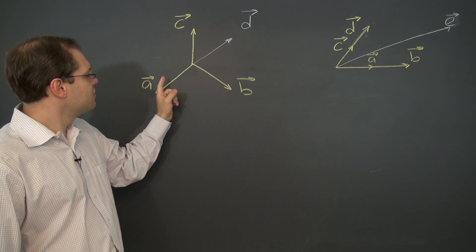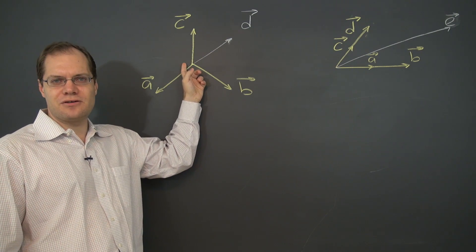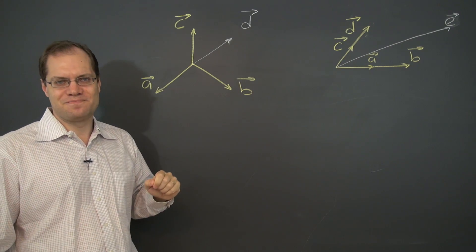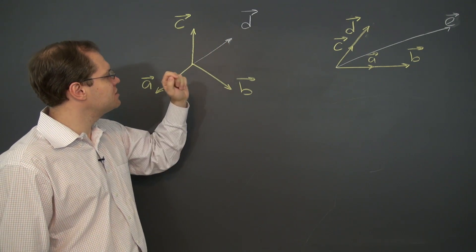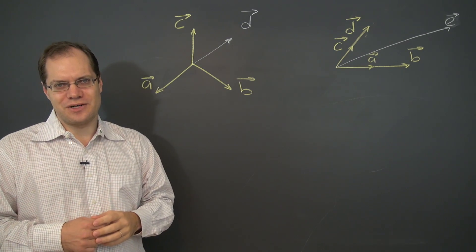So in the first one, the three vectors a, b, and c are meant to be all at 120 degree angle to each other and all equal length. We're supposed to decompose the vector d as a linear combination of a, b, and c in all possible different ways.